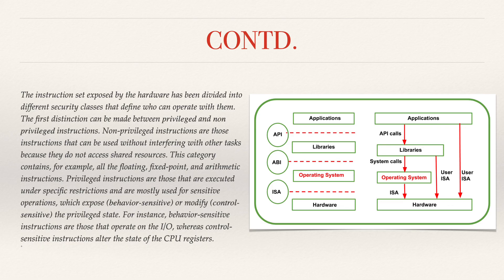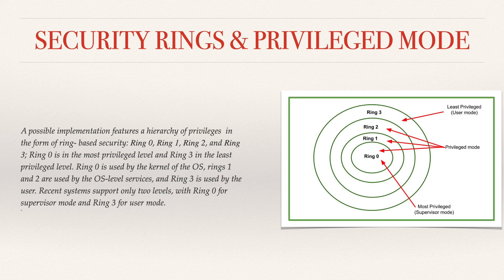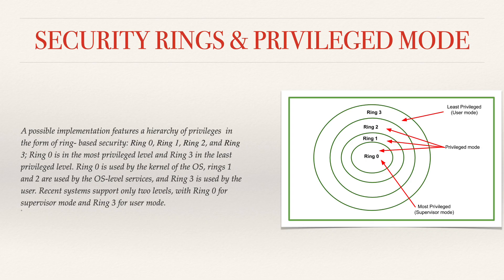Coming to security rings and privilege mode: as we saw with privileged and non-privileged instructions, we can now see a hierarchy of privileges in the form of rings based on security. In the picture, ring 0, ring 1, ring 2, and ring 3 are present. Ring 0 is the most privileged level and ring 3 is the least privileged. Ring 0 is used by the kernel of the OS, ring 1 is used by OS-level services, and ring 3 is used by the user. Recent systems support only two levels: ring 0 for supervisor mode and ring 3 for user mode.